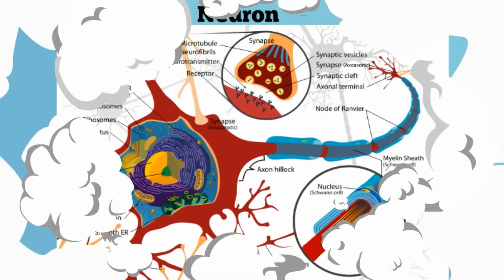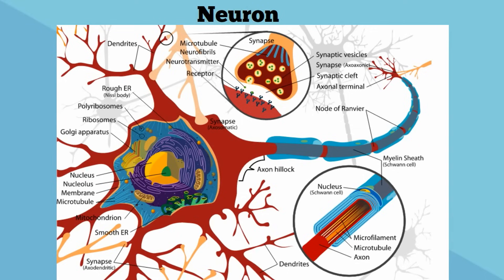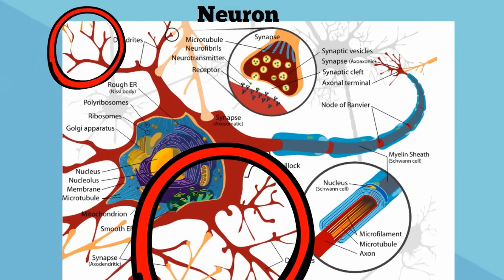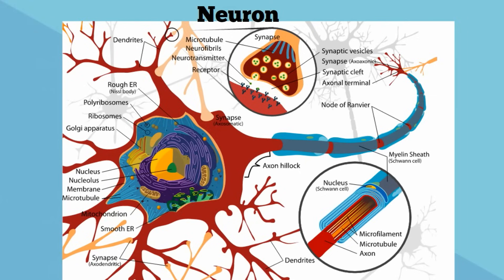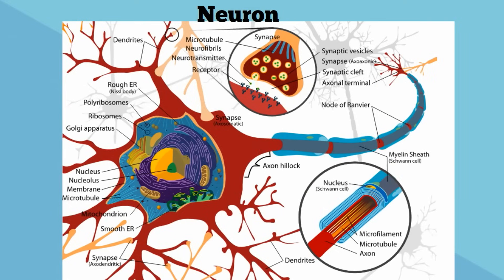A neuron has several parts. First they have a cell body, which contains the nucleus and other organelles like the mitochondria and ribosomes. They also have structures called dendrites that look a bit like tree branches. These dendrites receive electrical signals from other neurons. Next, a neuron has an axon and the nerve signal passes down the axon.